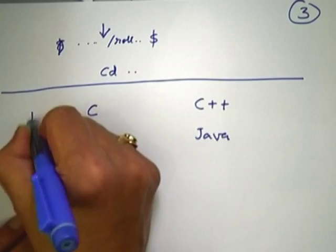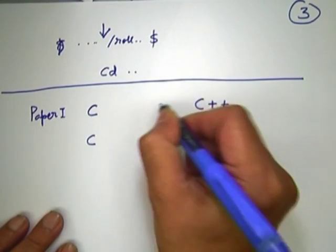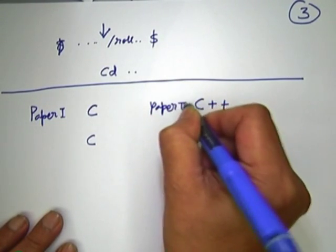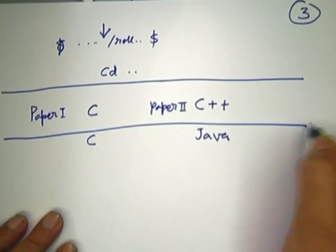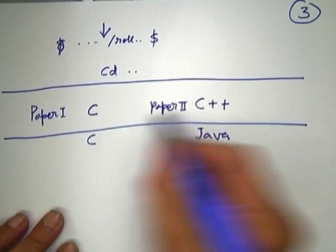Coming back to the common syllabus — I want to share some ideas on how we evolve this, as we also did in the last workshop. The subject of computer programming is unfortunately not taught as a single subject. Many colleges have two subjects in two different semesters: typically one is C programming and the other is C++ or Java programming. Can I take it that in the majority of institutions the organization is like this?